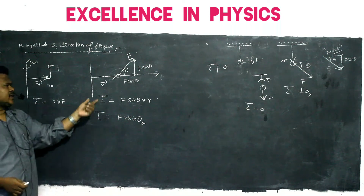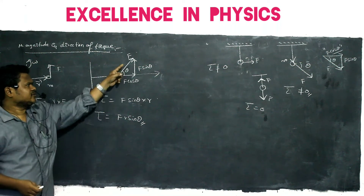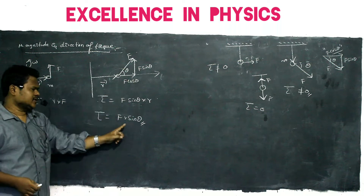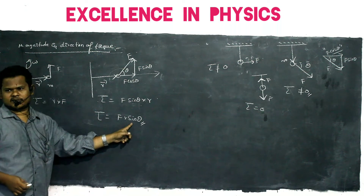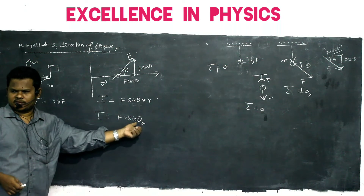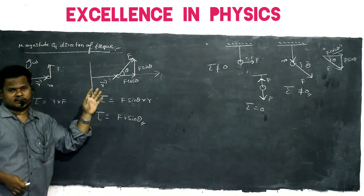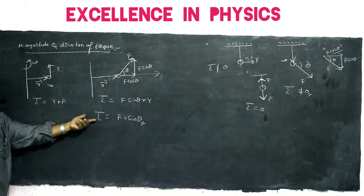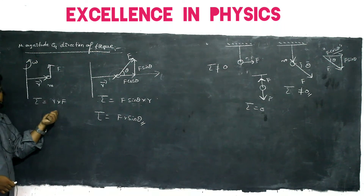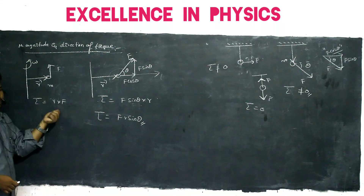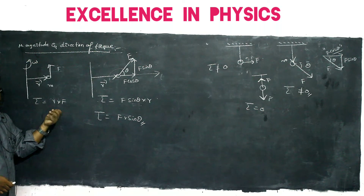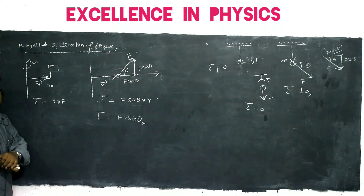If there is angle theta between force and radius vector, you have to take sin theta. Torque equals F into R into sin theta. For the perpendicular case, theta is 90 degrees, so sin 90 equals 1, and we get the same formula.